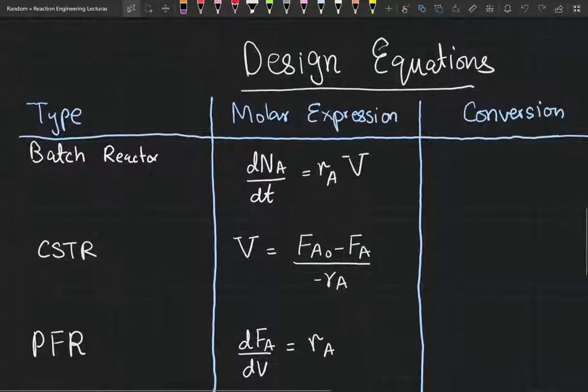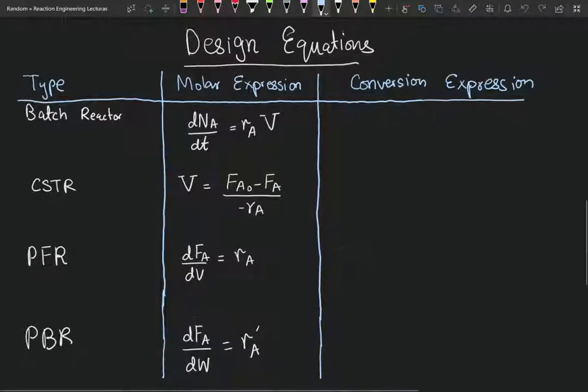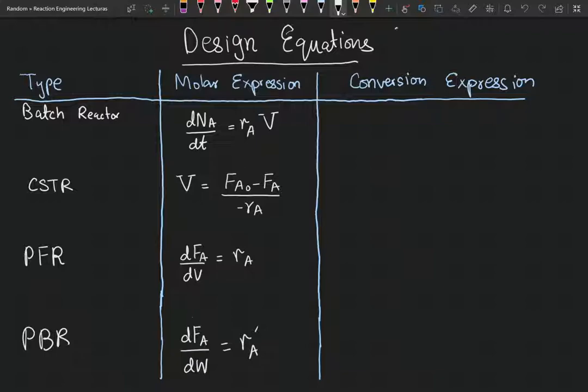Now, let's move on. Here I have my design equations. And these design equations are just taken from the back of chapter 1. So these design equations can be found in the back of chapter 1 in Fogler. The design equations in terms of the molar expressions, the dN_A dt, volume, these are all in terms of moles. And I'm using the same notation as Fogler. Now, we want to get rid of, we want equations in terms of conversion. We want equations in terms of conversion. So we've got to get rid of dN_A. We've got to get rid of F_A0 minus F_A. dF_A goes away. And dF_A goes away again.